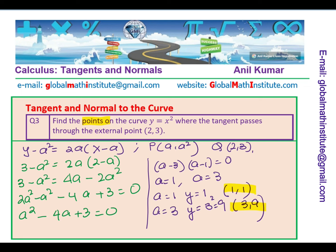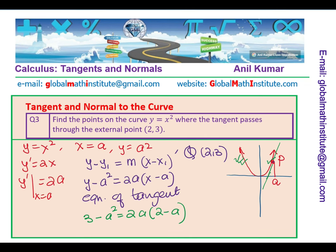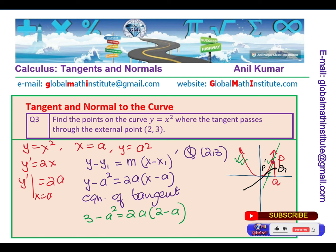When you get this kind of problem, visualize it: one tangent goes from the external point to one side of the parabola, and the other goes to the other side. Those are the two points P and P-dash from where we draw tangents to the given curve. We used the point on the curve to write the tangent equation, and by substituting the external point, we solved and found two values of a. I hope you find it interesting and useful.